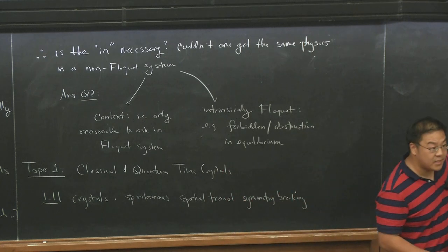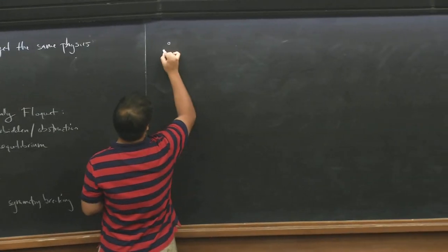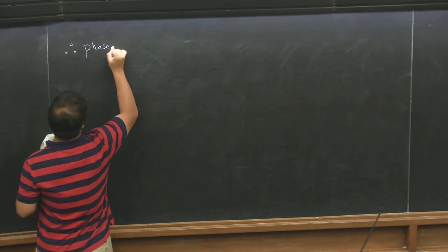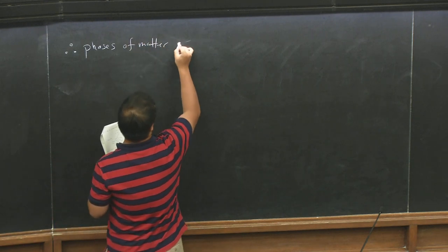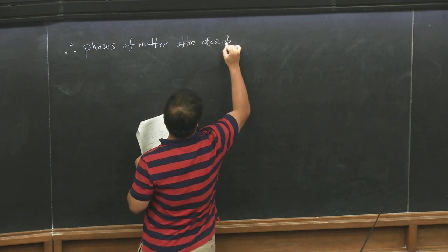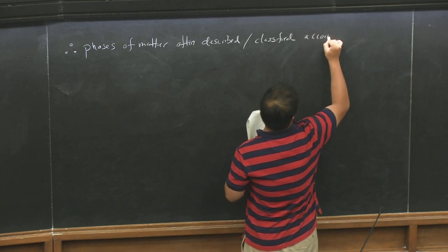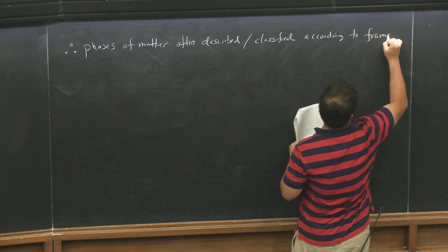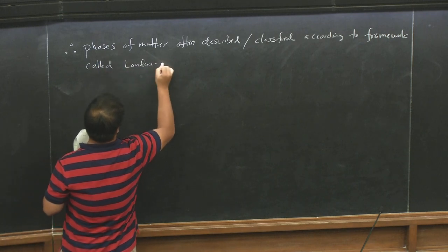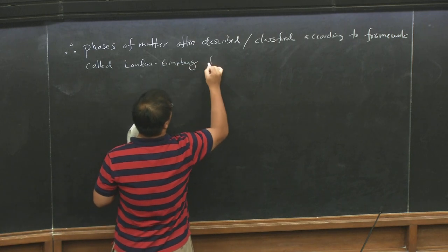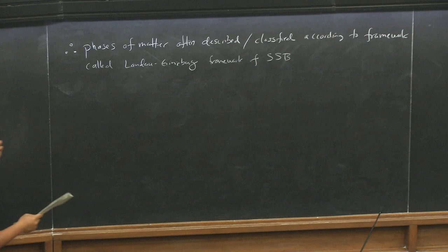Many of you are also familiar with thinking about crystals as a phase of matter in the context of spontaneous symmetry breaking and in the particular context of spontaneous spatial translation symmetry breaking. As a very general rule of thumb, in equilibrium we oftentimes think of phases of matter as defined with respect to the notion of spontaneously breaking a symmetry. This is oftentimes called the Landau-Ginzburg framework of spontaneous symmetry breaking, which I'll abbreviate as SSB.